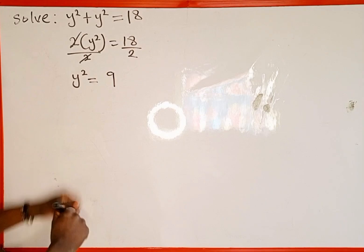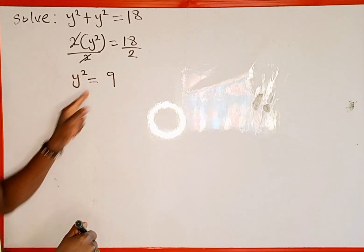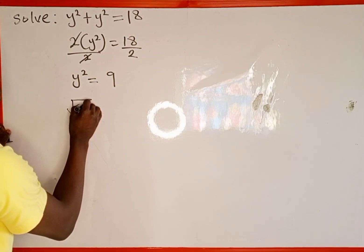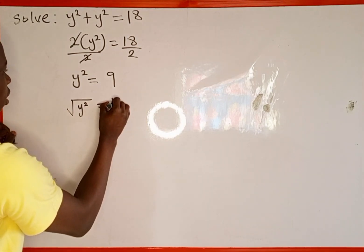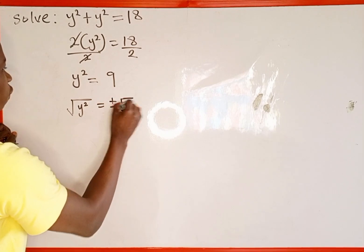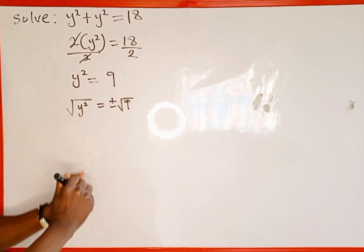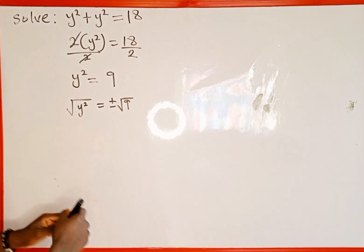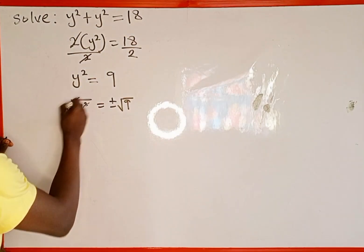So we are looking for the value of y. How are we going to remove this square? By taking the square root of both sides. Square root of y squared is equal to negative and positive square root of 9. Whenever you are taking square root, it yields positive and negative square root of that number.